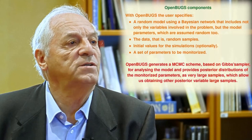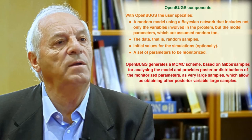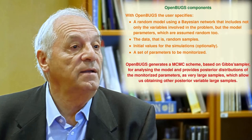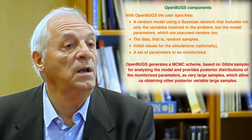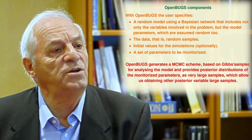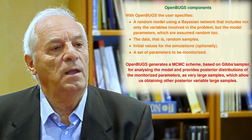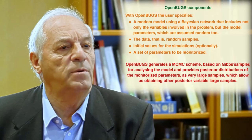With OpenBUGS, the user specifies: first, a random model using a Bayesian network that includes not only the variables involved in the problem but the model parameters, which are assumed random too; the data, that is random samples; initial values for the simulations (although this is optional); and a set of parameters to be monitored. Then OpenBUGS generates a Markov Chain Monte Carlo scheme based on Gibbs sampler for analyzing the model and provides posterior distributions of the monitored parameters as very large samples, which allow obtaining other posterior variable large samples.